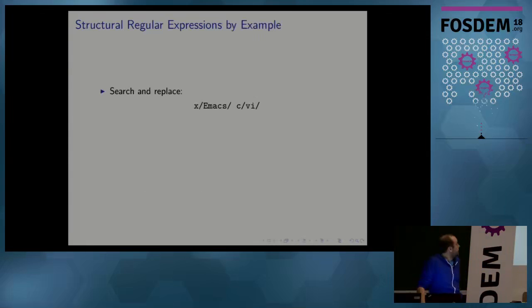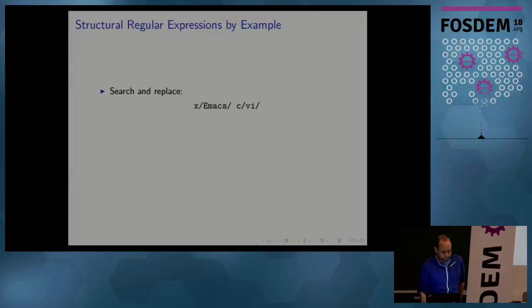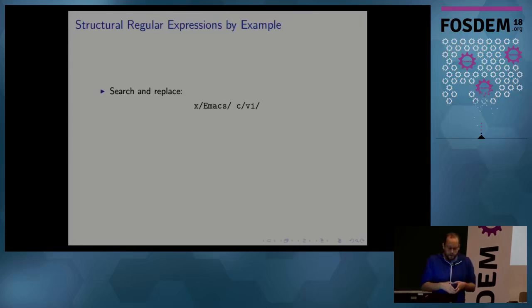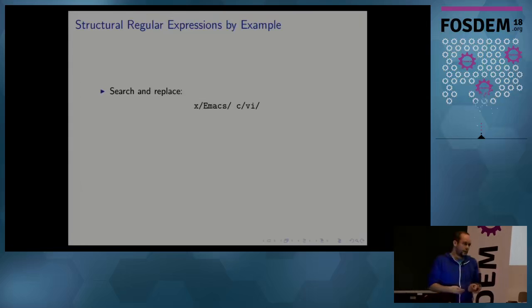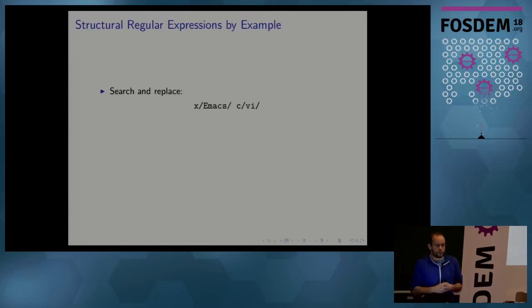Here are a few examples. For a search and replace, we can first extract all occurrences of Emacs and then change it to Vi. Note that this is all an interactive process. If we stop these pipelining commands in the middle — for example, if we only extract all occurrences of Emacs — you would be dropped into visual mode with a selection for each match, which you could then further modify with your regular modal editing commands.